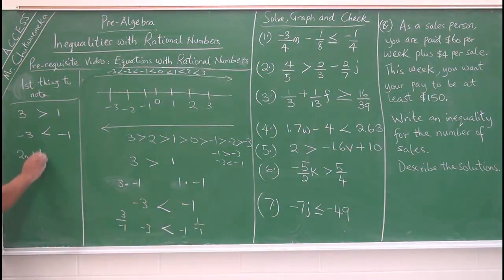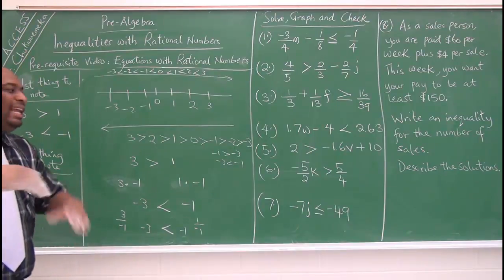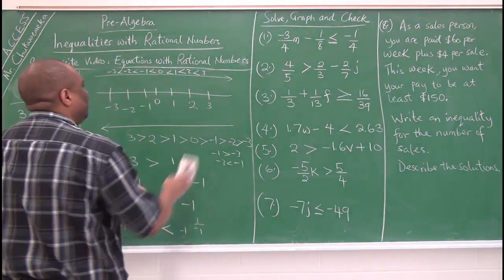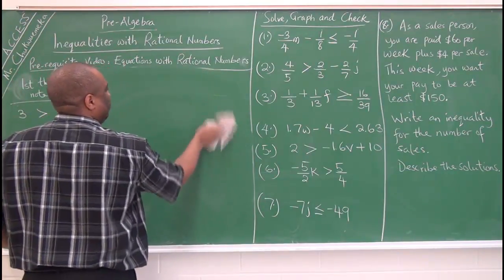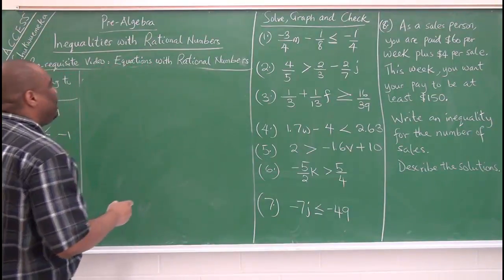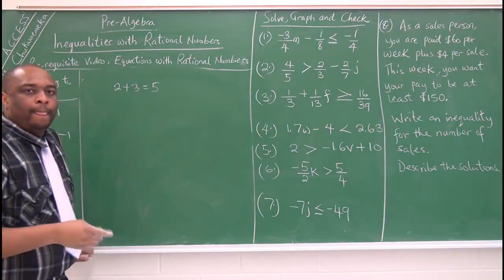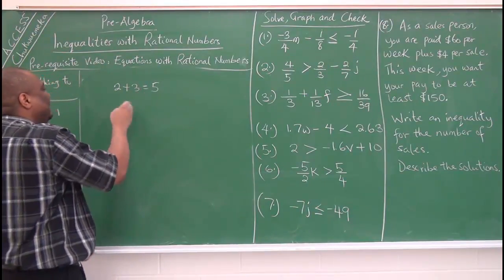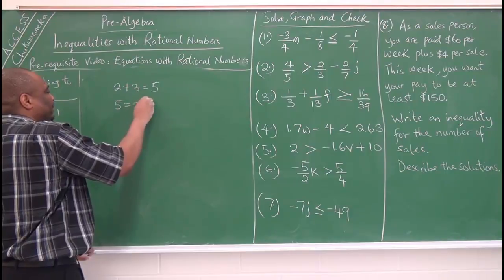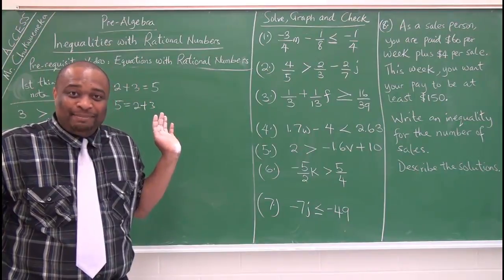The second thing to note: in an equation it doesn't become a problem, but in inequality it is a problem. With an equation, 2 plus 3 equals 5, and 5 equals 2 plus 3 — no problem. But in inequality it is a problem, and I'll show you.